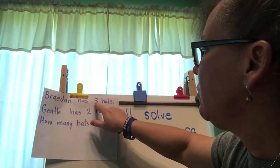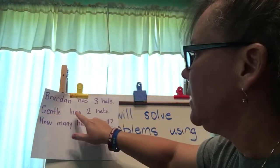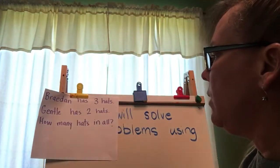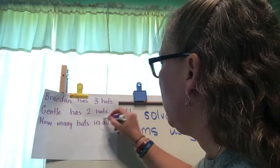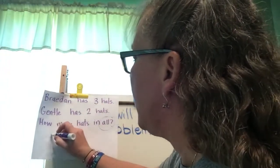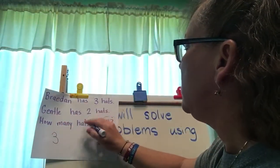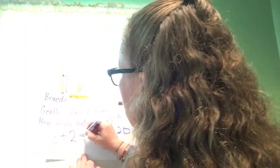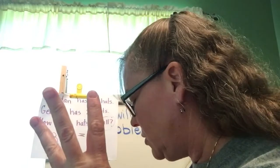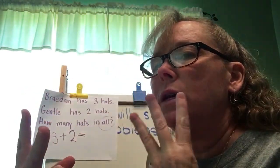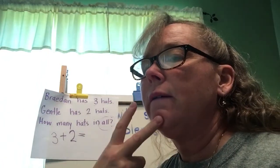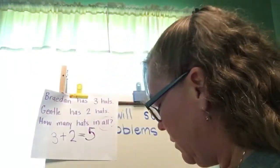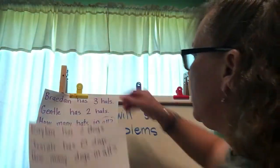Brayden has three hats. Gentle has two hats. How many hats in all? Well, we know it has to be addition because it says 'in all,' so I'm going to take the first number — Brayden has three — and then Gentle adds two, and that equals... let's use our fingers: three plus two, one, two, three, four, five. Good job — and you're going to write the five.